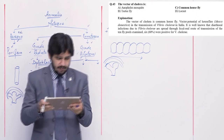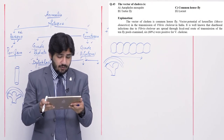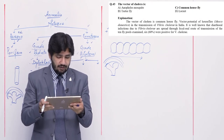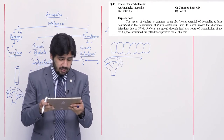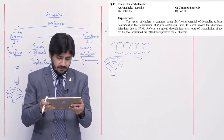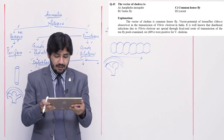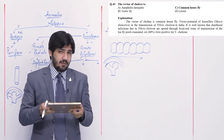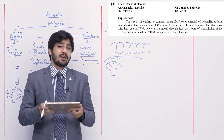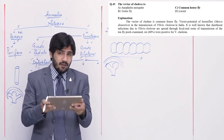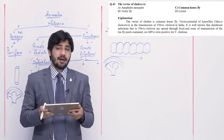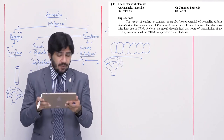Question number 43: the vector of cholera is — alpha Anopheles mosquito, beta tse-tse fly, charlie common house fly, and delta locust. The vector for cholera is the common house fly. Right option is charlie.